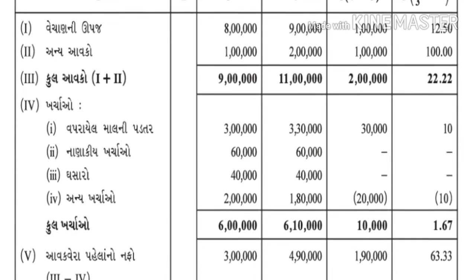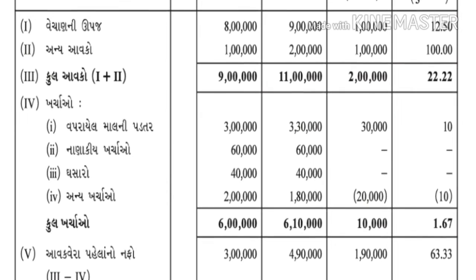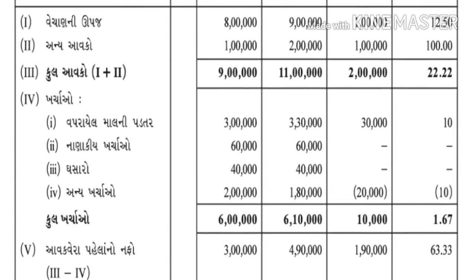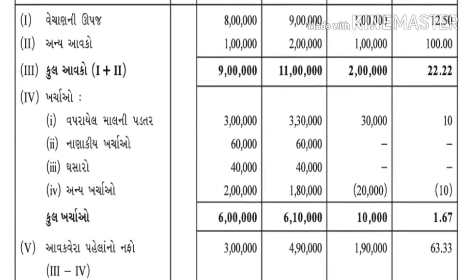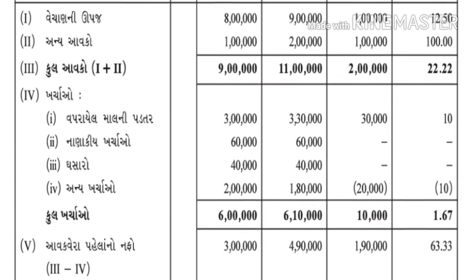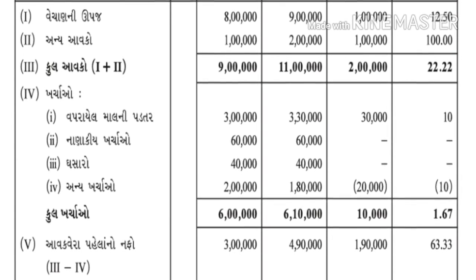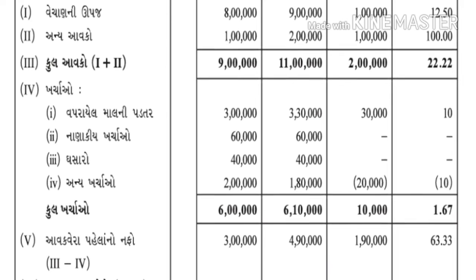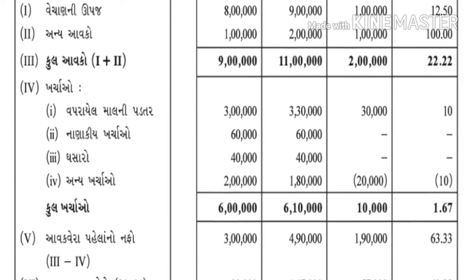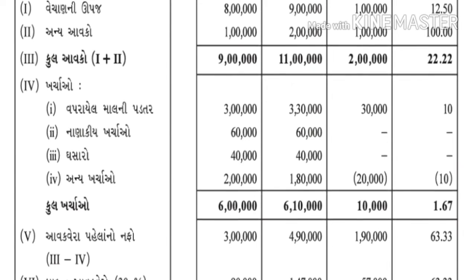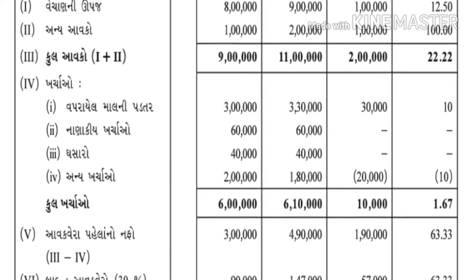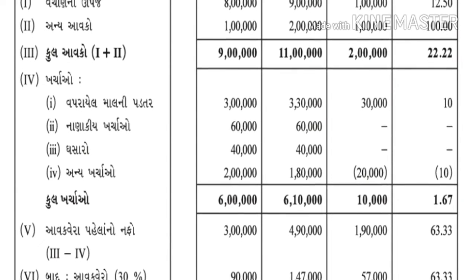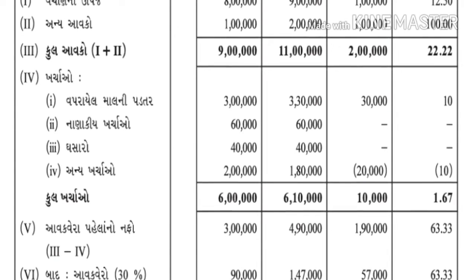ઉલ્ટો ઉતારો - ત્યાં કૌંસની અંદર લખવાની. કંપનીના ખાતામાં એ જ પ્રમાણે જ લખાય. કૌંસમાં લખેલી હોય - ખર્ચાઓ - ત્યાં, કૌંસ - ત્યાં - ખર્ચ - ટકાવારી - ત્યાં - ત્યારે ટકાવારી કઈ રીતે શોધીએ?